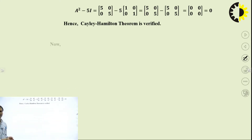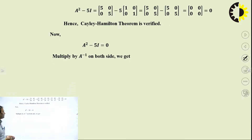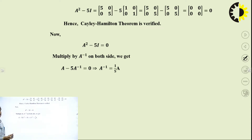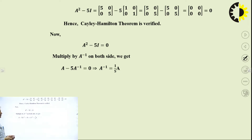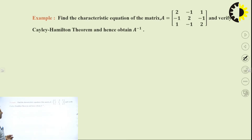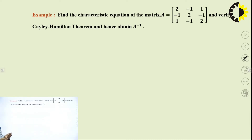It is 100% proved that every square matrix is satisfied by its own characteristic equation, so the theorem is verified. We can also find A inverse: taking the product of A inverse on both sides gives A minus 5A⁻¹ equals 0, therefore A⁻¹ equals (1/5)A. This is very important — you can have the value of the inverse in terms of A, which gives a rapid calculation method.